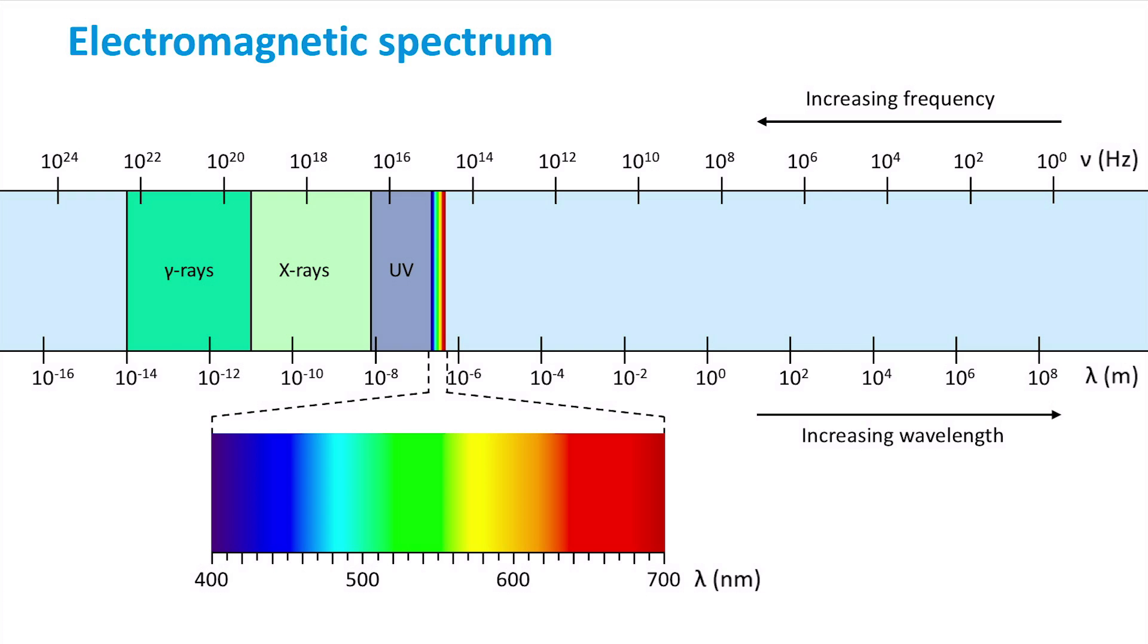Photons with even smaller wavelengths are known as gamma rays. If the wavelength is about 100,000 times smaller than a nanometer, the photons are called cosmic rays.